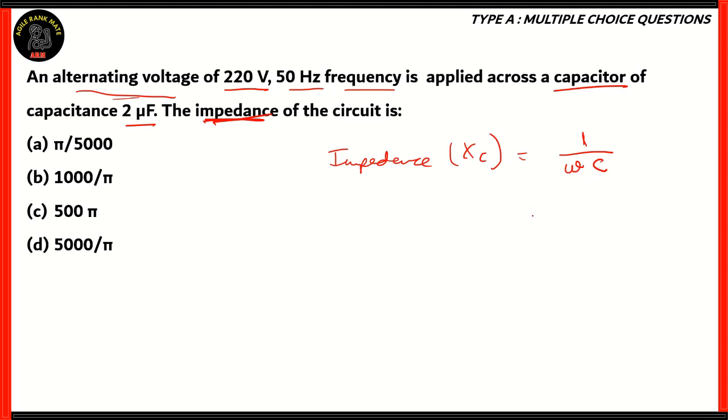Impedance, which is represented as Xc, is equal to 1 over omega times the capacitance. Omega, which is the angular frequency, can be represented as 2 pi times the linear frequency. Since all of the answers are in pi, we don't need to find the value of pi itself. We do know the value of frequency and the capacitance.